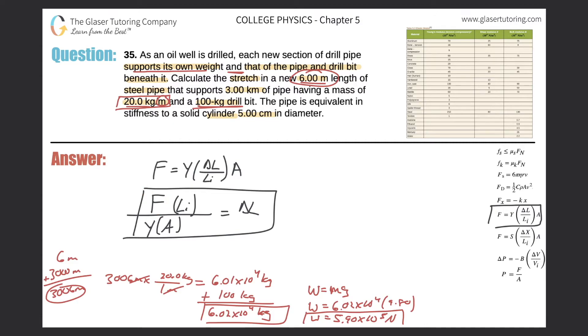So why don't we start plugging some stuff in. I'm going to write the formula over here now. So the force is 5.90 times 10 to the fifth. What's the initial length of the pipe? It's not the total length of all the pipes. What are we trying to calculate the stretch or compression of? Calculate the stretch of this pipe, the six meter. So that is the initial length, six meters, not 3,006. Very important to know what you're calculating for.